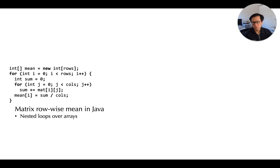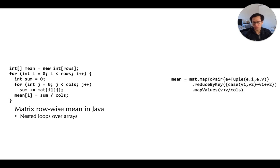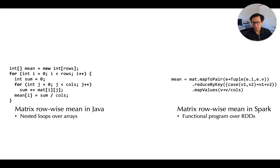Now let's say we want to rewrite this piece of computation, but this time using a MapReduce mechanism. Here is the exact same computation again, but now expressed as a functional program over RDDs exposed by the Spark framework.